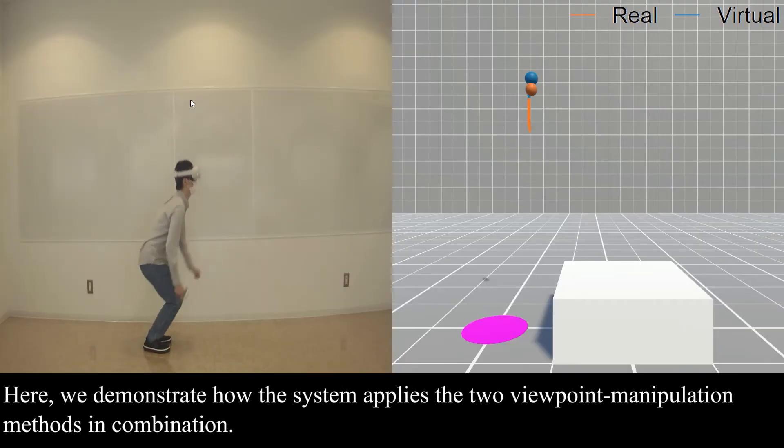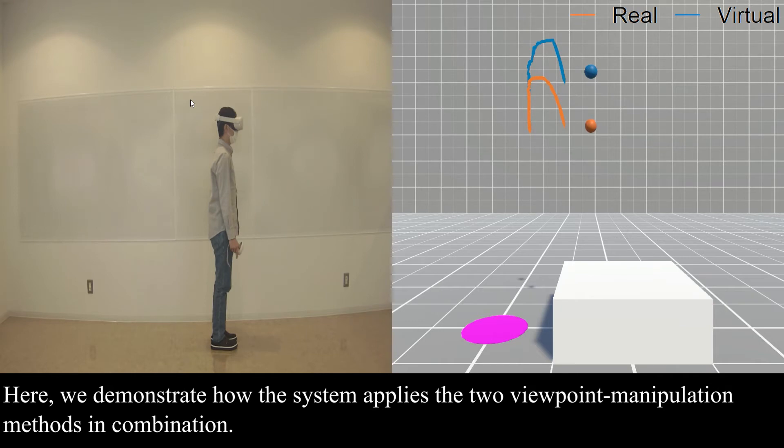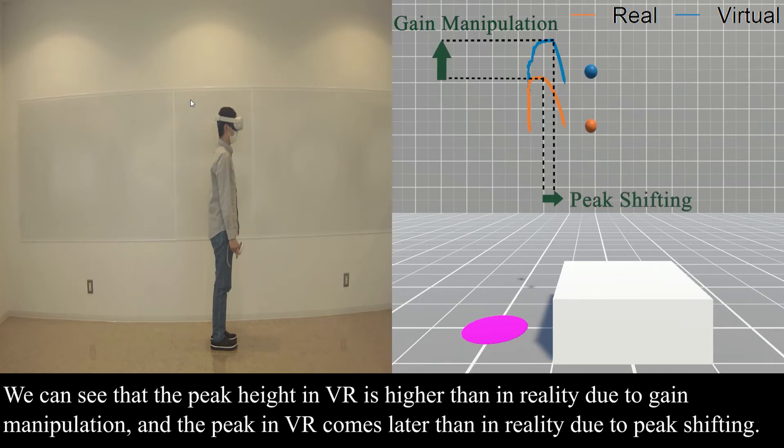Here, we demonstrate how the system applies the two viewpoint manipulation methods in combination. We can see that the peak height in VR is higher than in reality due to gain manipulation, and the peak in VR comes later than in reality due to peak shifting.